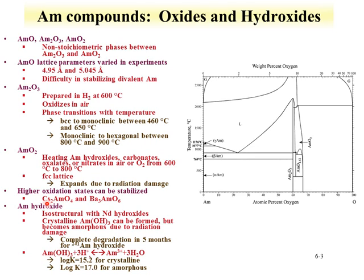Higher oxides can be stabilized through the formation of mixed metal compounds, since americium does have higher oxidation states. Neptunium hydroxide, which can be formed from the precipitation of americium-3 in basic solutions, is isostructural to neodymium hydroxides. The compound can be crystalline but becomes amorphous due to radiation damage. The hydrolysis constants and solubility constants are known, and this behavior between crystalline and amorphous variations is reflected in the KSP.